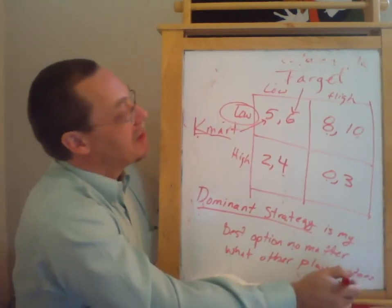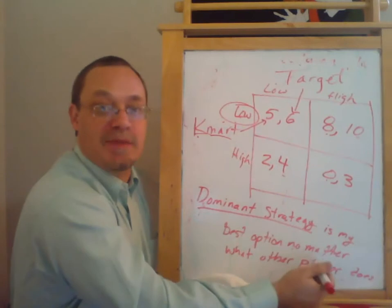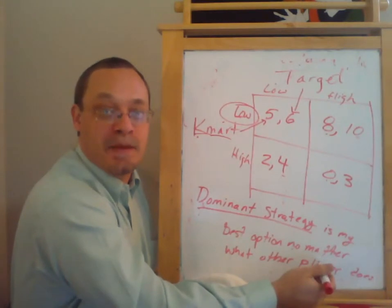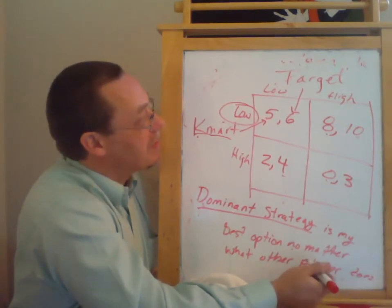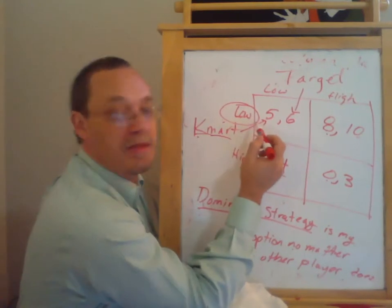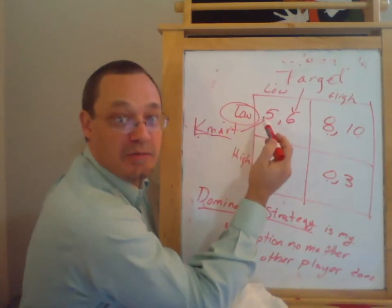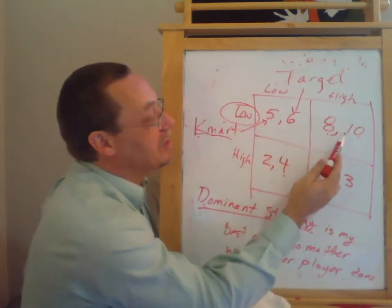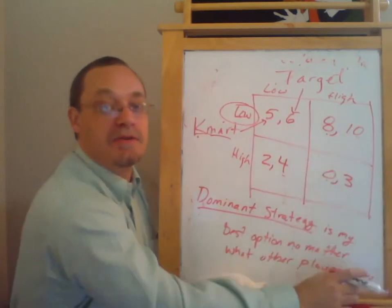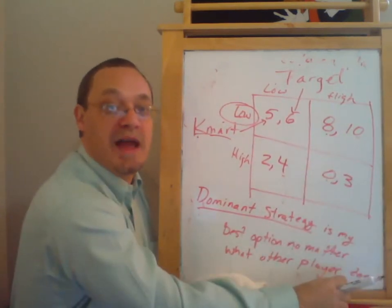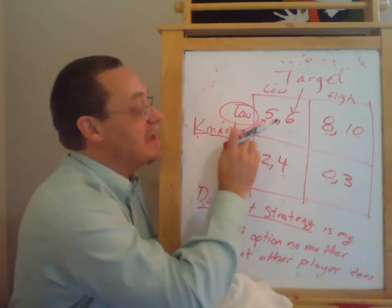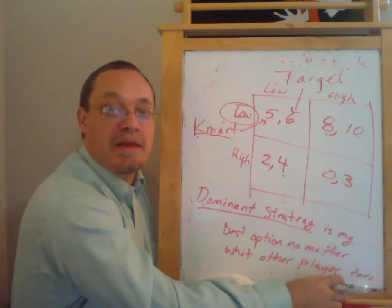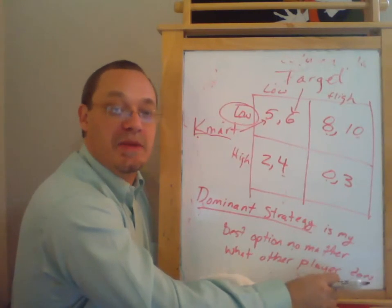Now, of course, if Target knows that Kmart has a dominant strategy, Target knows that Kmart will play its dominant strategy. And if Target knows Kmart will play its dominant strategy, then we can get a prediction of what Target will do. Namely, Target will choose to play high. So even though Target doesn't have a dominant strategy, the way this game is going to play out, the fact that Kmart has a dominant strategy is going to make Target's behavior predictable.